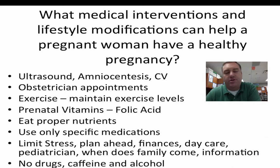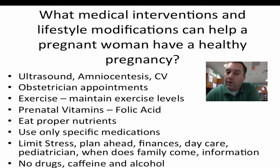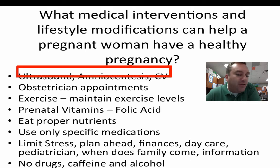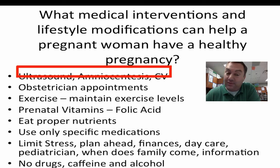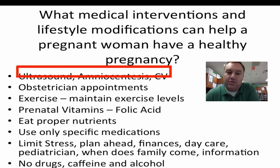What medical interventions or lifestyle changes could a pregnant female make to give her baby a better chance of being born healthy? Number one: go through all the screenings. Take the ultrasound — they're inexpensive and give a great picture of the developing fetus, especially with new 3D ultrasounds. If the ultrasound indicates higher risk for something like Down syndrome, then proceed to amniocentesis and chorionic villus sampling, but only if you have to.